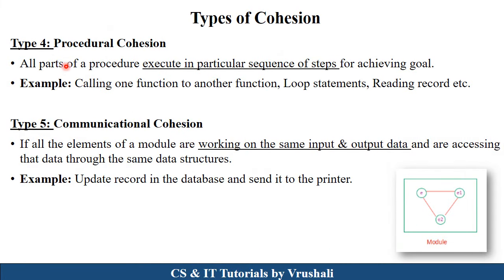The next type is procedural cohesion, where all functions and methods in your program are executed sequentially. For example, calling one function from another — like declaring void addition and calling void display from within it. Sequential performance of steps such as loop statements and reading records are all called procedural cohesion.